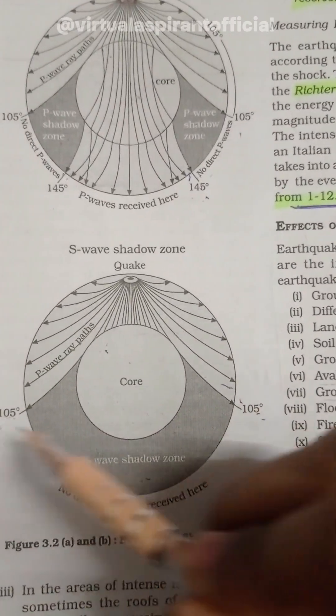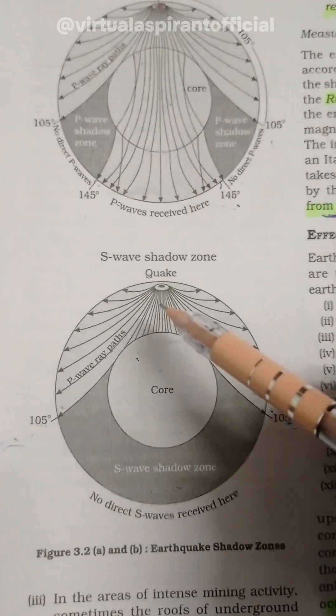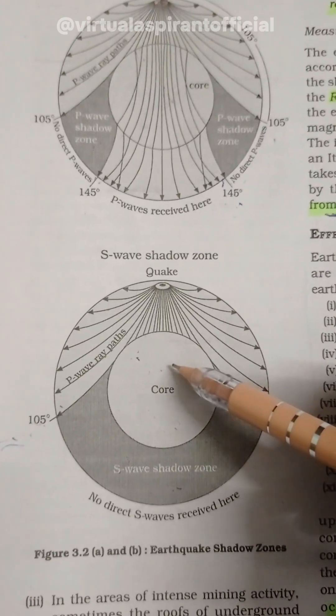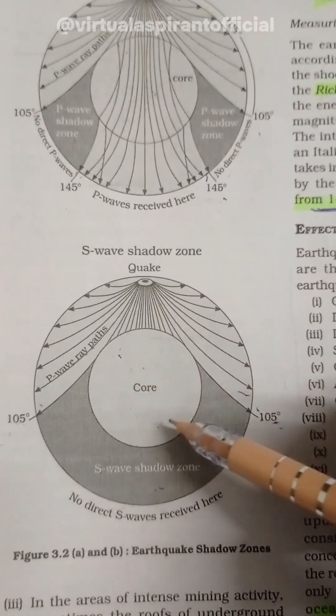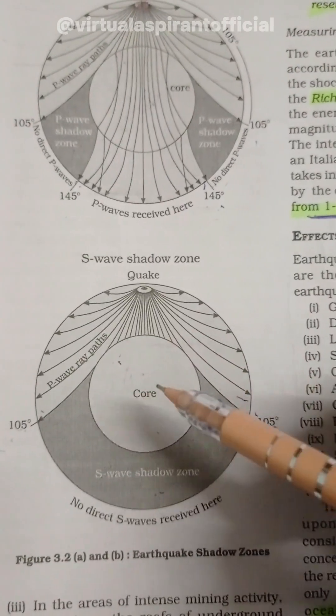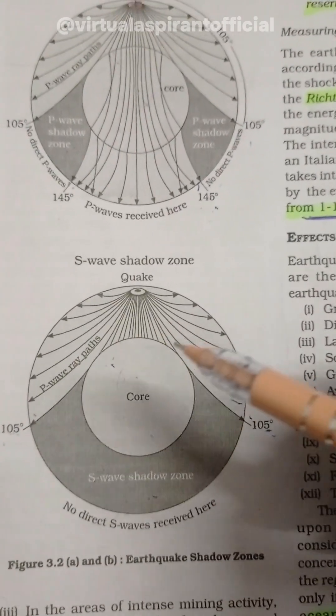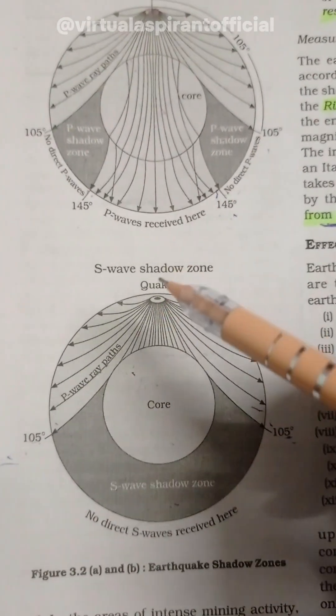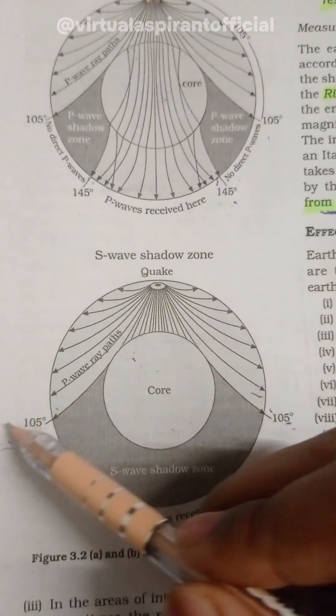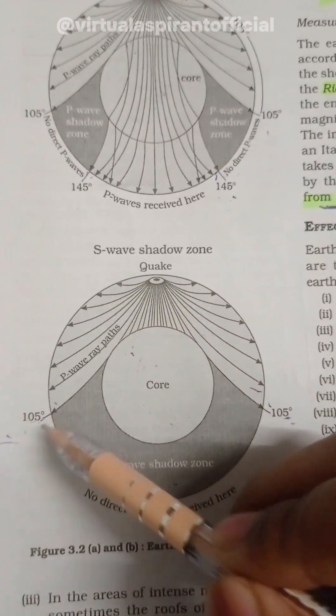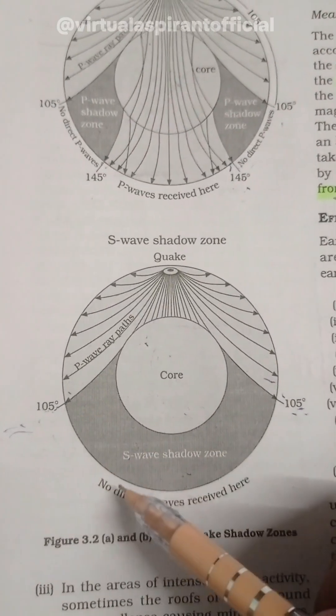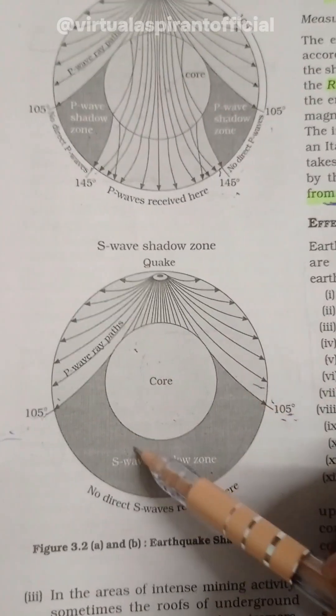This is the widest distance at which the S waves can penetrate. It cannot penetrate through the core. Why? Because the outer core is in liquid form and there is a property of S waves that they cannot penetrate through the liquid form. Hence the widest angle it can penetrate is 105 degrees. So this area is known as the S wave shadow zone because this is the area where S waves cannot penetrate and cannot be experienced.